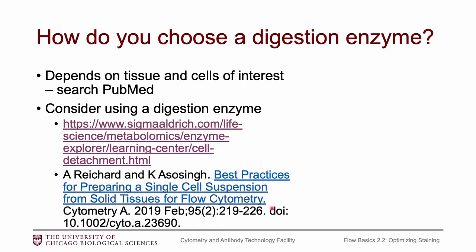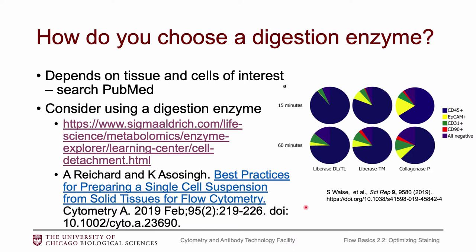Keep in mind that changing the digestion protocol can change your ultimate results. This figure outlines that nicely: three different enzyme combinations were tested, along with 15 minutes versus 60 minutes, and you can see that the frequency of different cell types retrieved was definitely impacted by the type of enzyme and the time the tissue spent in the enzyme. Other factors like temperature and the concentration of the enzyme you use can also affect results, so there's a lot to play around with to get optimal results.